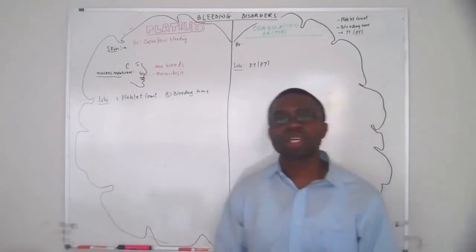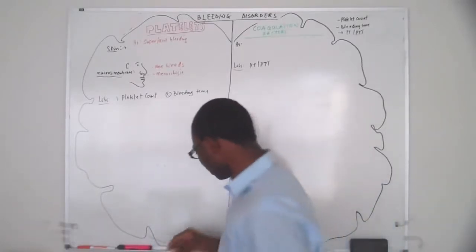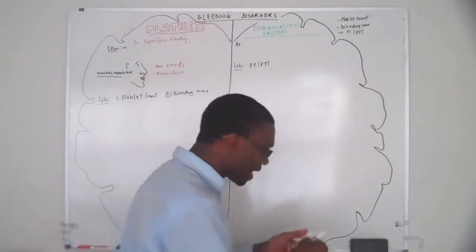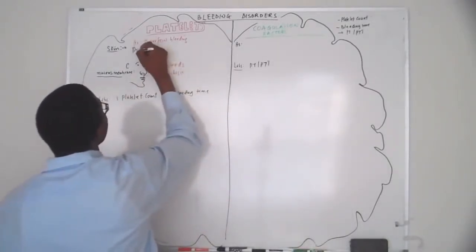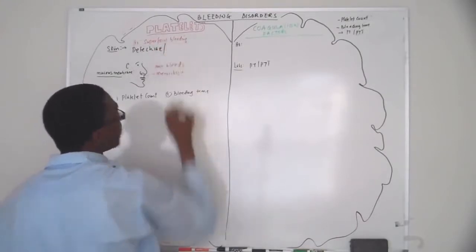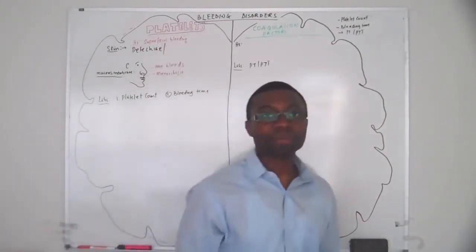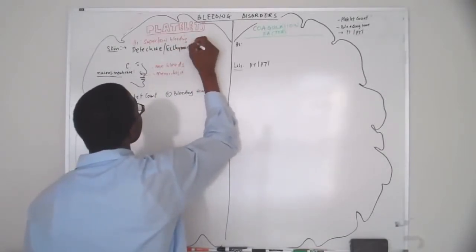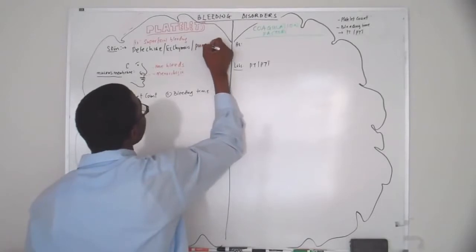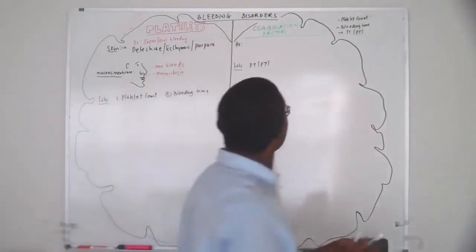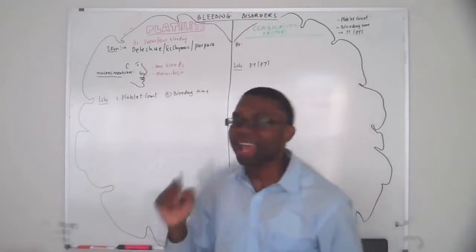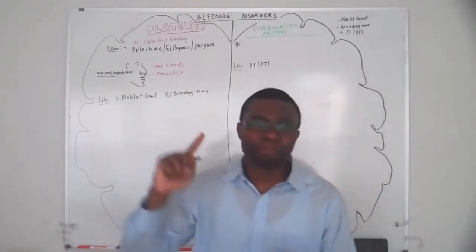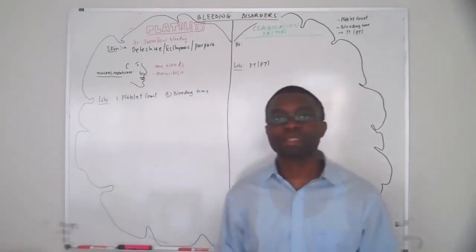They're going to come in with superficial bleeding — that's the history. They'll say, 'Doc, I noticed I have these little dots on my skin.' They call them petechiae. Or they might have something called ecchymosis, or a purpura. From now on, anytime you hear purpura, ecchymosis, or petechiae — always think platelets.